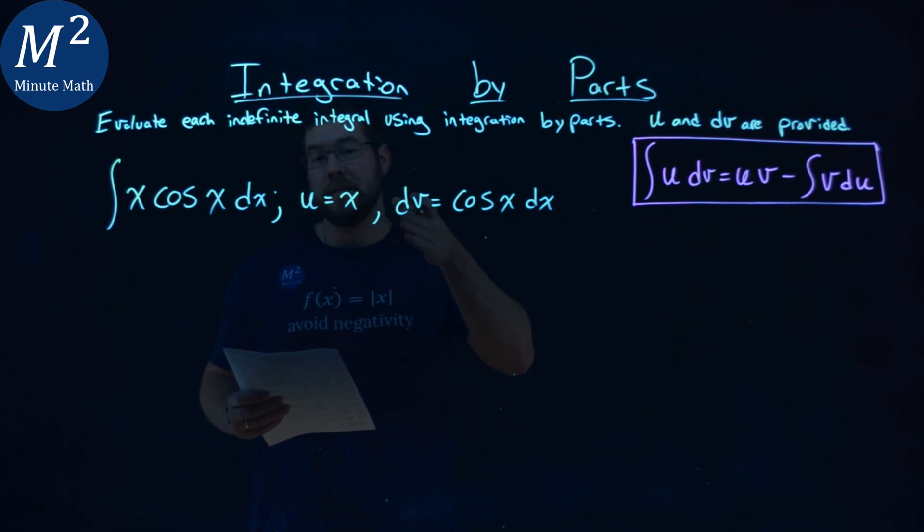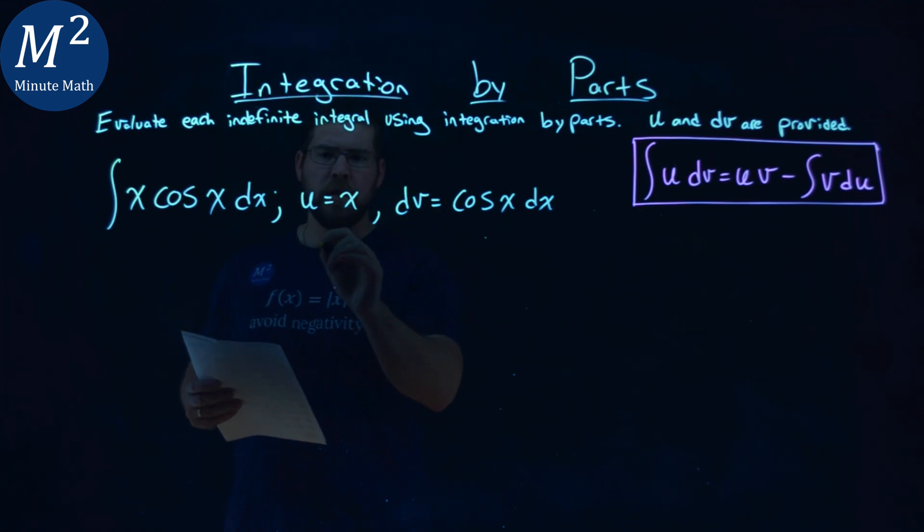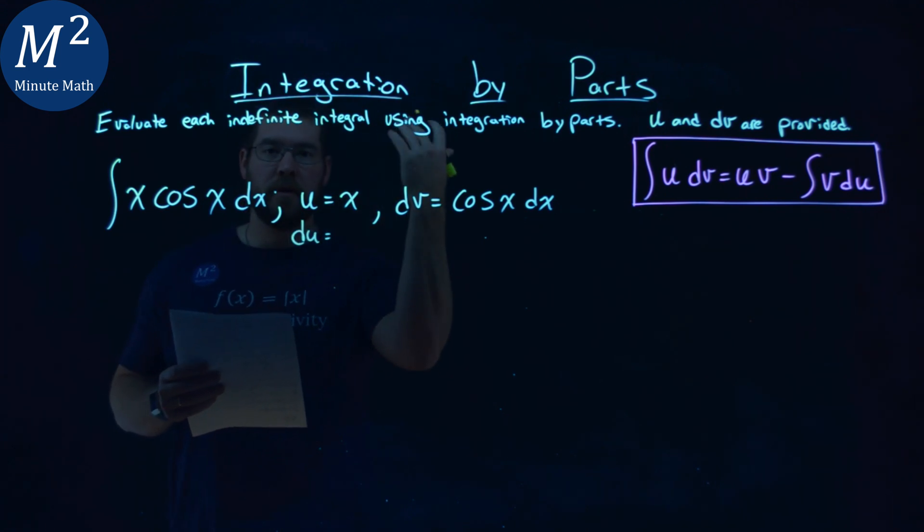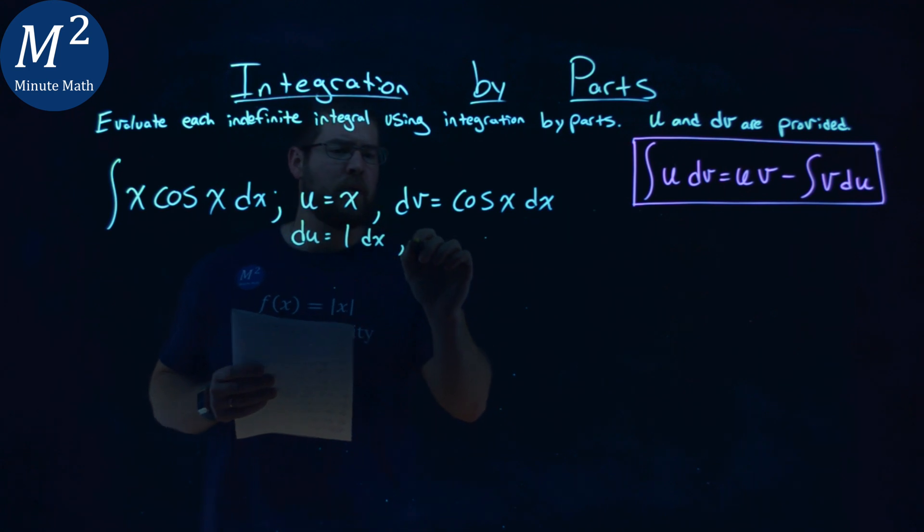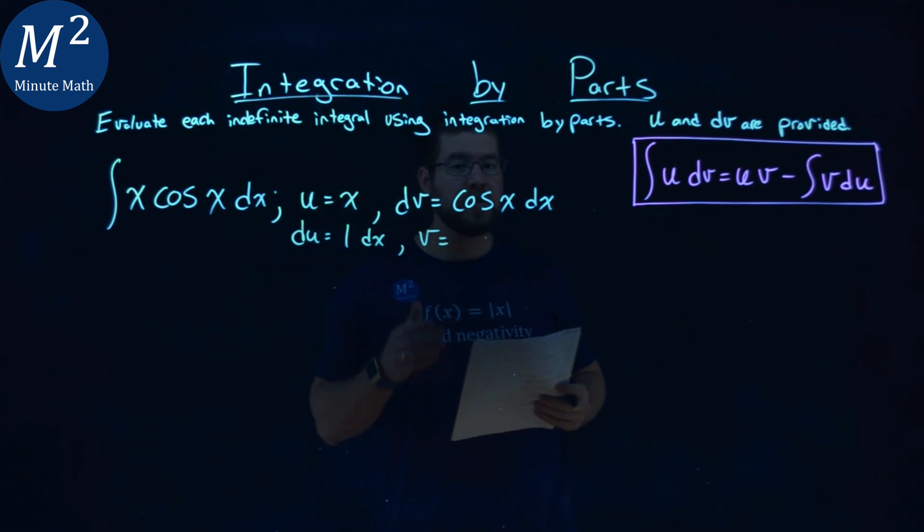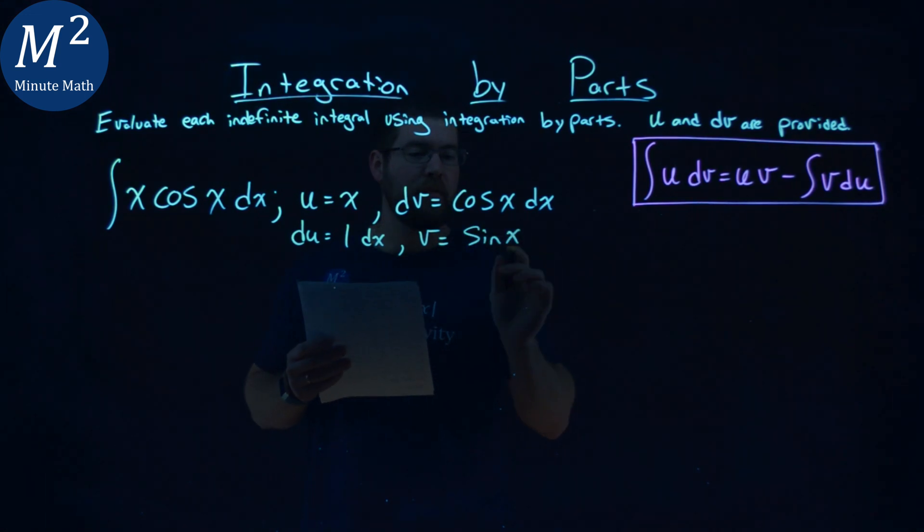So since we already have our u and dv, let's go find our du and v. Our du value here, the derivative of x, is just 1 dx. Pretty easy. To find our v value, we're going to integrate our dv, and the integral of cosine of x is sine of x, right there.